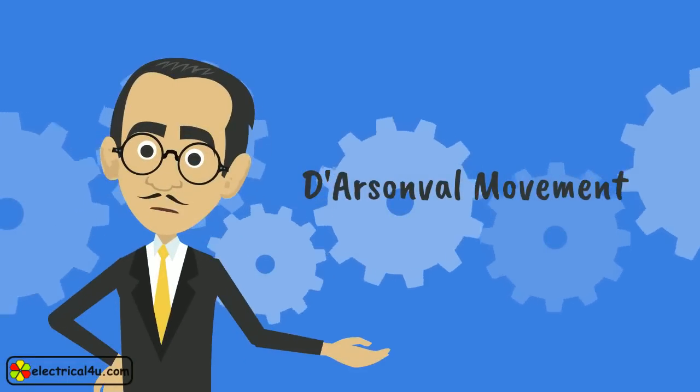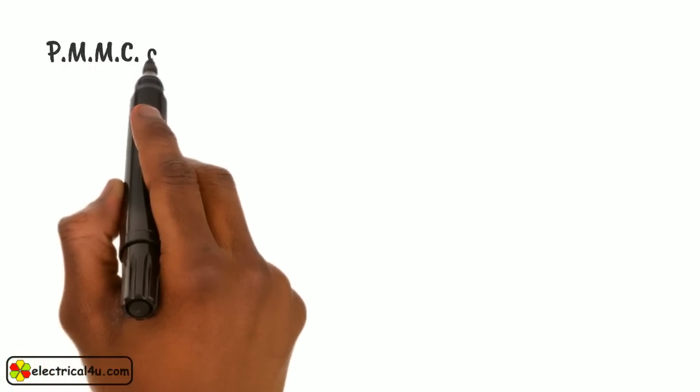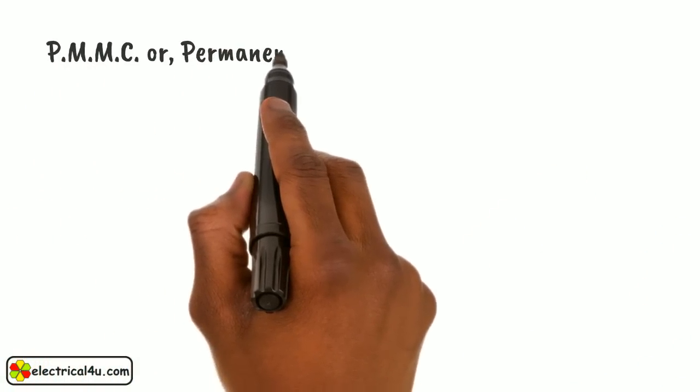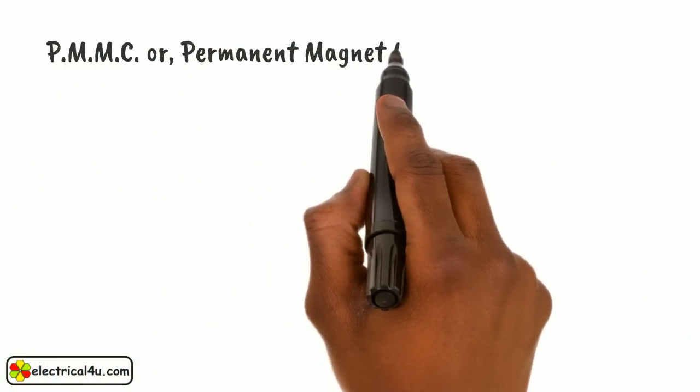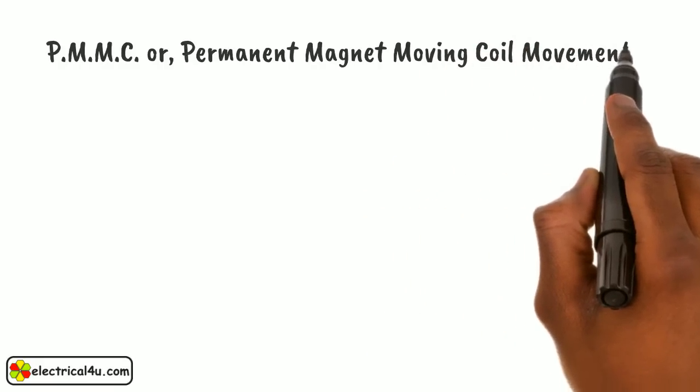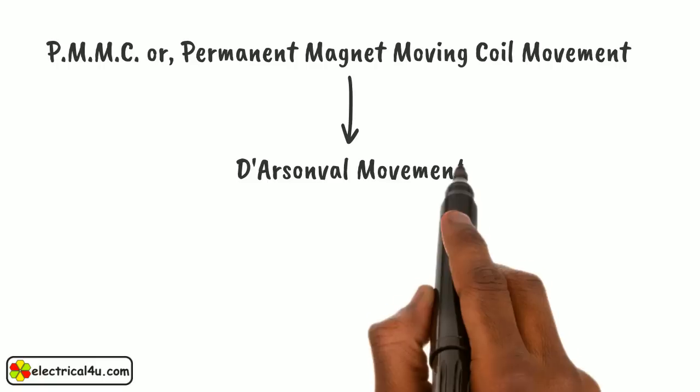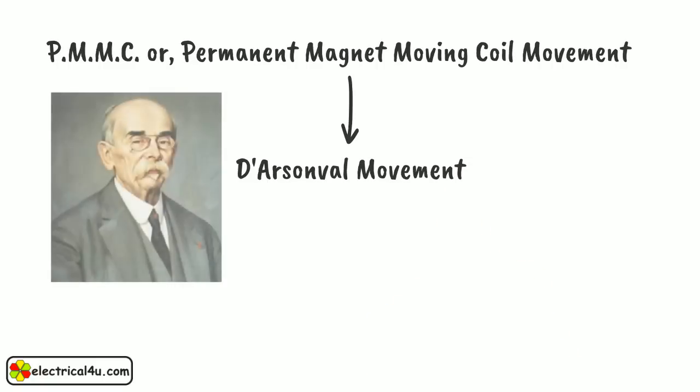Let us discuss D'Arsonval movement. The PMMC or Permanent Magnet Moving Coil movement is alternatively known as D'Arsonval movement because this type of movement was invented by D'Arsonval.